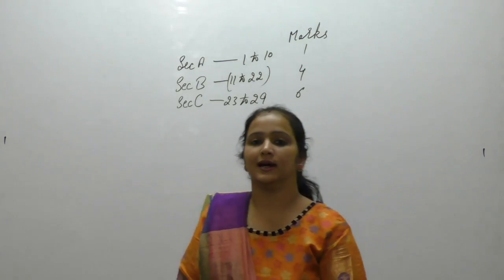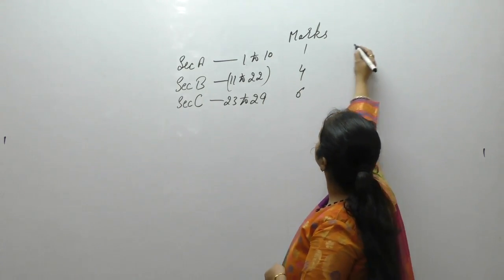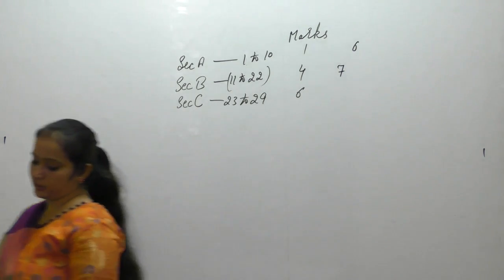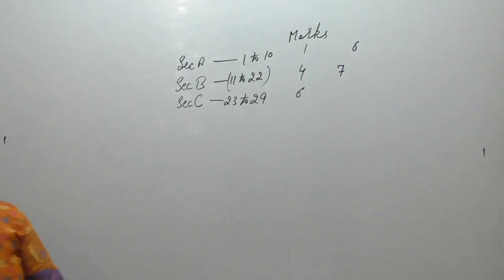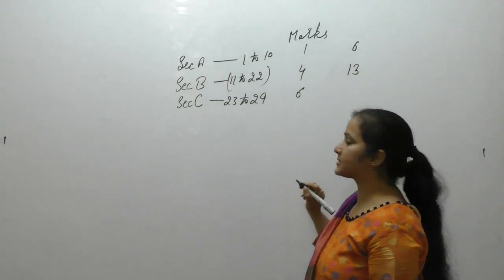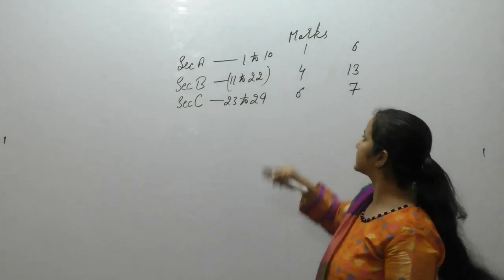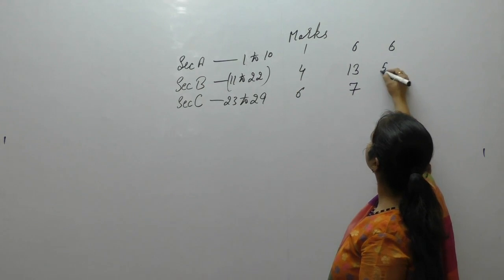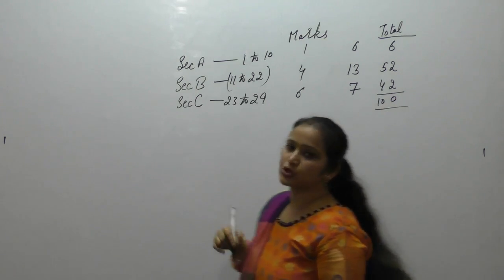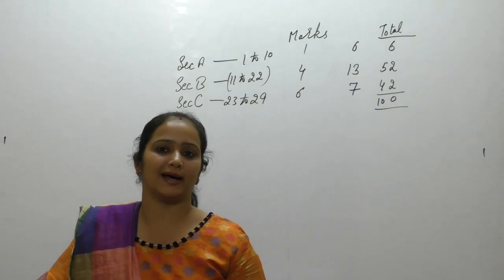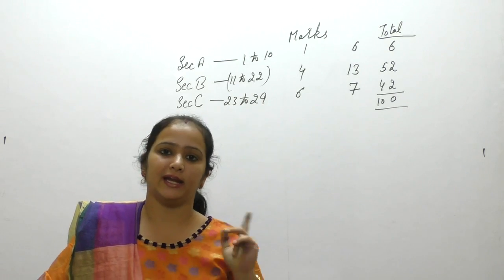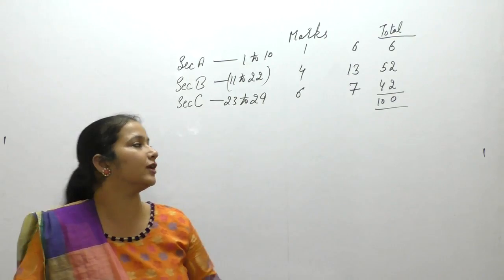There is a chance the pattern may change — we may get 6 questions in Section A, then questions 7 to 19 (13 questions of 4 marks) and 7 questions of 6 marks. That gives 6 marks + 52 marks + 42 marks = 100 marks. This pattern change may apply from 2017; it is not confirmed yet.